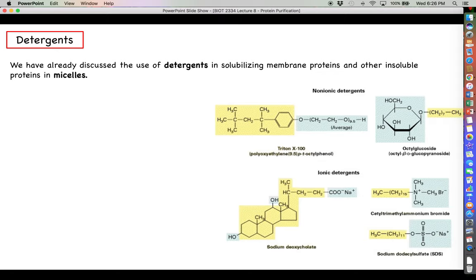We've already discussed how detergents can be very useful because detergents like the ones that you see here, like Triton X-100 or sodium dodecyl sulfate, they are what we call amphipathic molecules, meaning that part of the molecule is hydrophilic and can interact with water, and the other part of the molecule is hydrophobic and is capable of interacting with other hydrophobic substances.